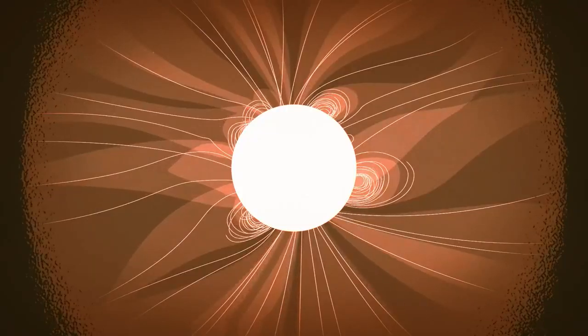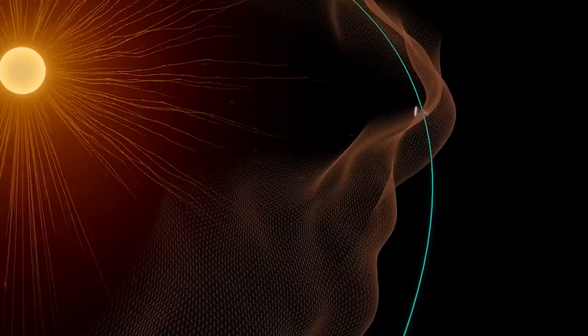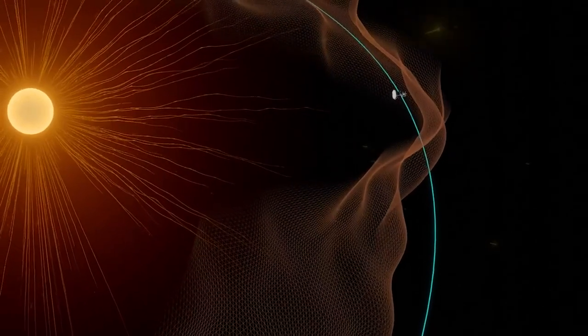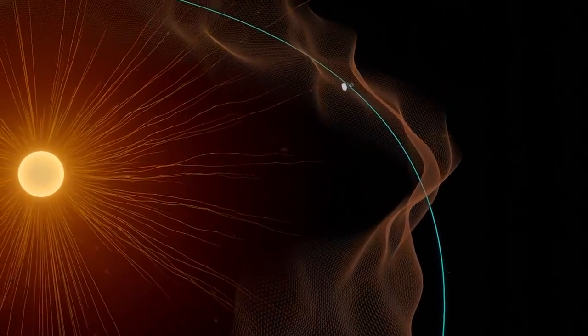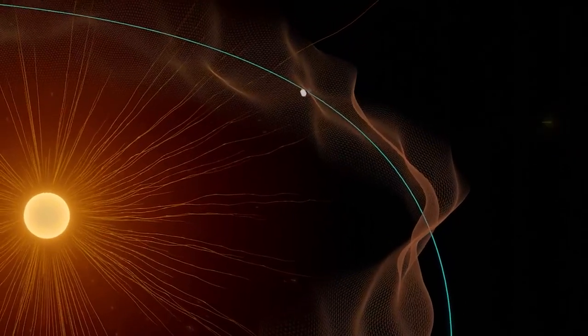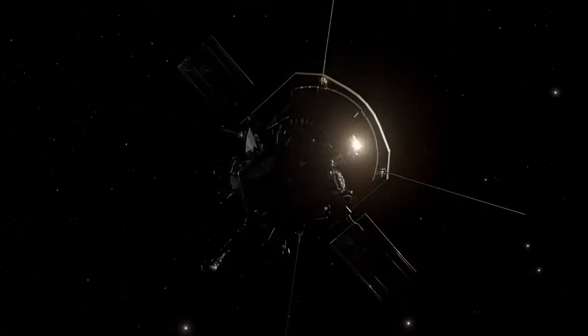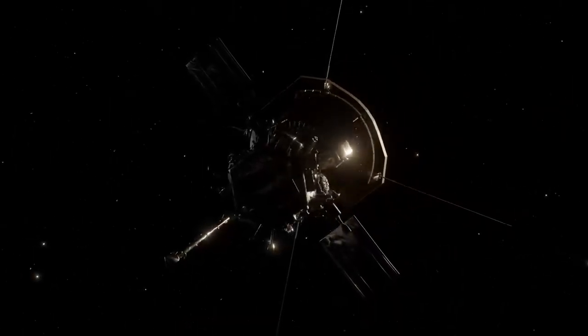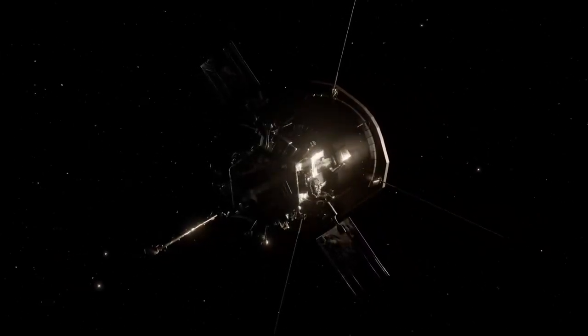Instead of a smooth divide, Parker found that the boundary between these two sides is wrinkly. These bumpy ridges are created from huge flows of plasma travelling out of the corona. Scientists are not sure why this happens, but as Parker gets closer, we're finding more clues.